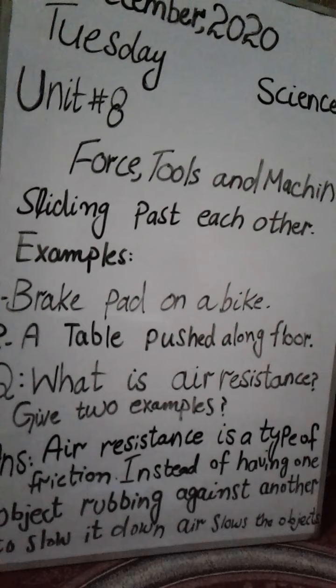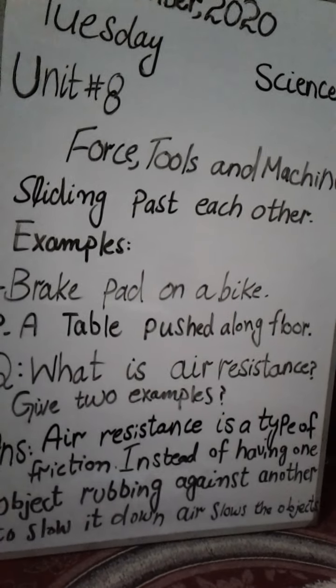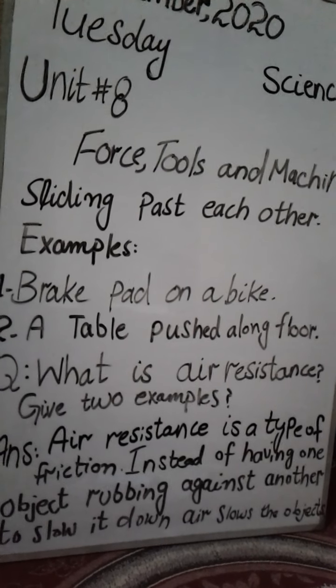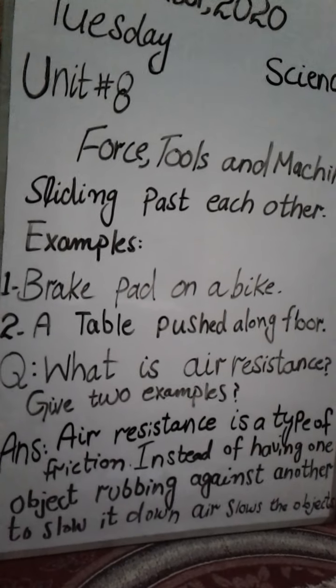The answer to the question 'What is friction? Give 2 examples from daily life of how friction helps us' — answer: Friction is a force that is produced by rubbing two objects. It helps to stop or slow things that are sliding past each other. Examples: brake pads on a bike — when we apply brake pads, it brakes through friction; a table being pushed along the floor is also an example of friction.